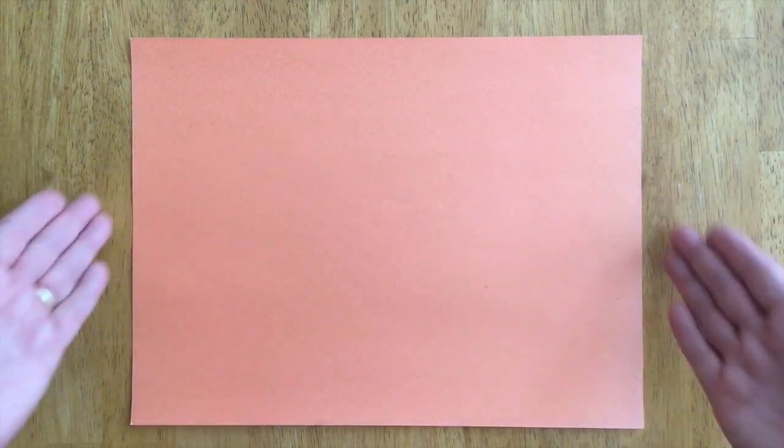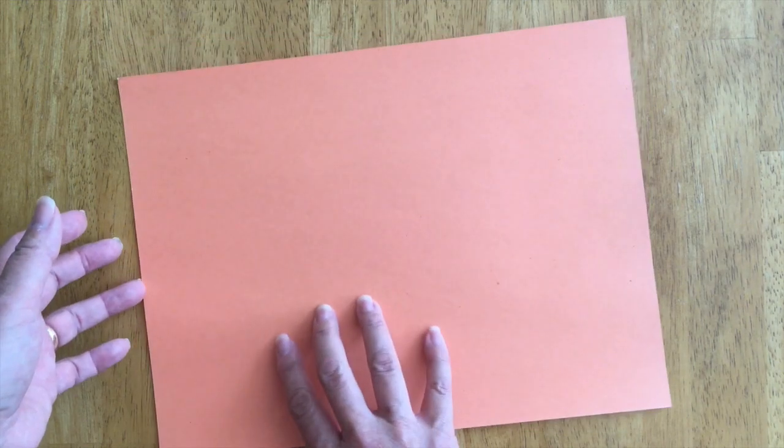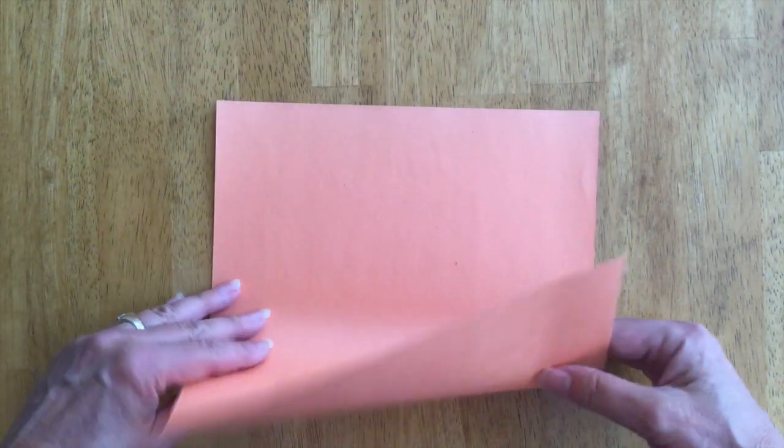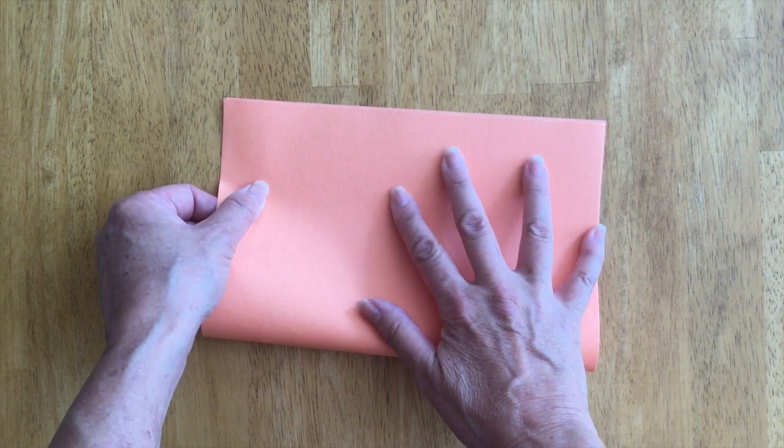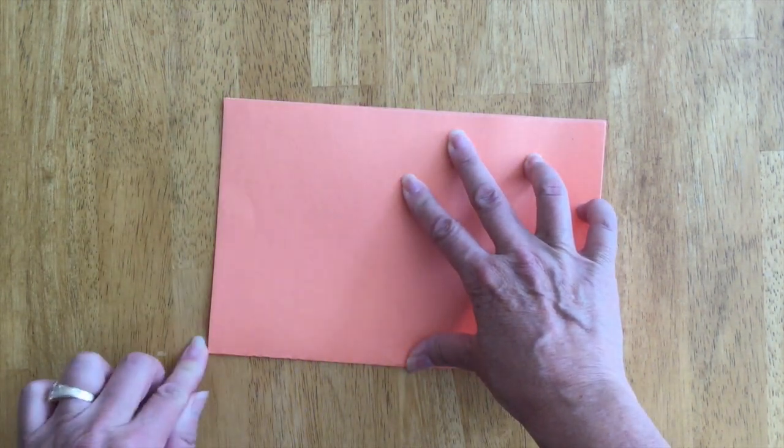So what you're going to do is take a whole sheet of paper and fold it in half hamburger fold, matching up the corners corner to corner, and then flatten out the crease.